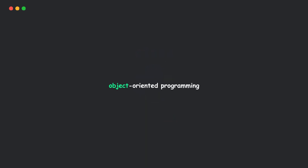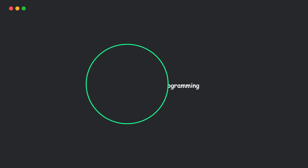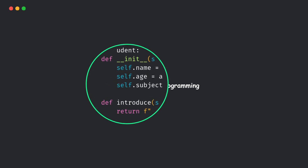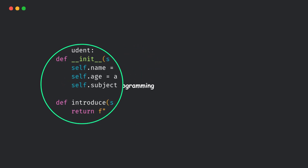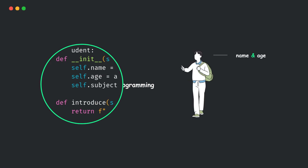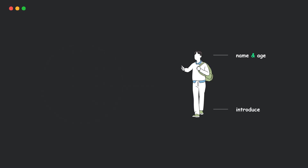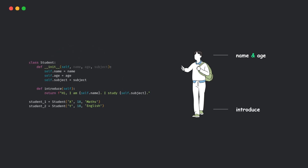Object-oriented programming in Python is just a way of writing code that reflects how things work in the real world. In real life, everything has some data, such as a student having a name and age, and everything can perform actions like introducing itself. OOP in Python lets you model that same idea using classes and objects.